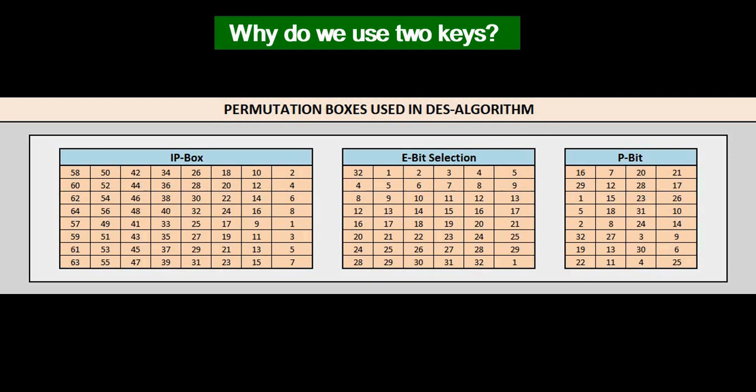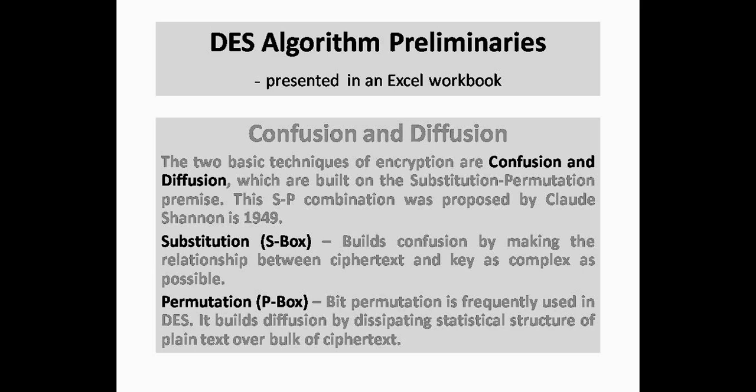For now, instead of a key, just remember it's P-boxes in DES. Point is that by combining the two basic encryption techniques of confusion and diffusion, which are themselves built on the substitution-permutation premise, one could completely obscure the statistical properties of the original message from showing themselves in the ciphertext. This SP combination for encryption was proposed by Claude Shannon in 1949.